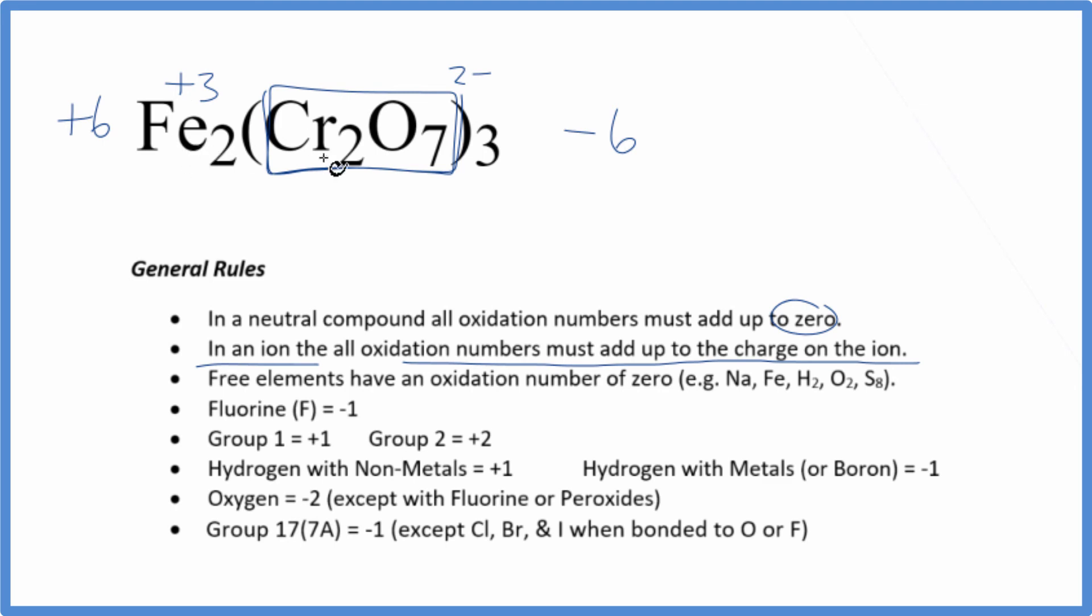That's why we call this iron(III) dichromate. If you need help finding the oxidation number for the chromium in Cr₂O₇ with this two minus, the dichromate ion, there's a link in the description to help you do that.